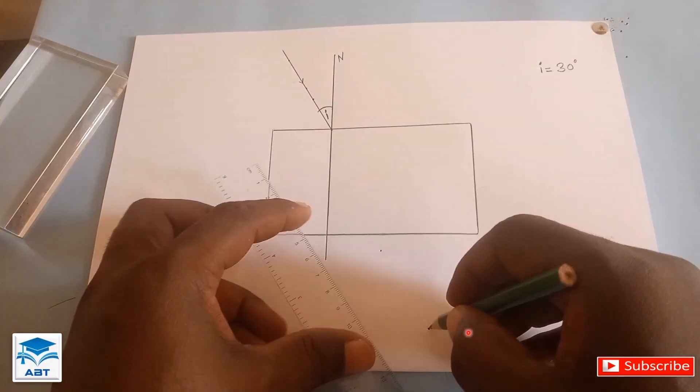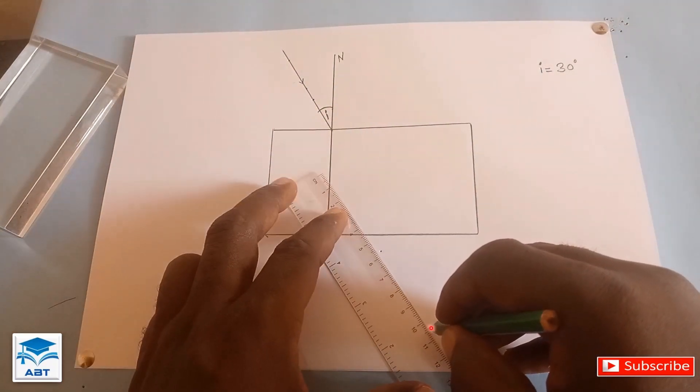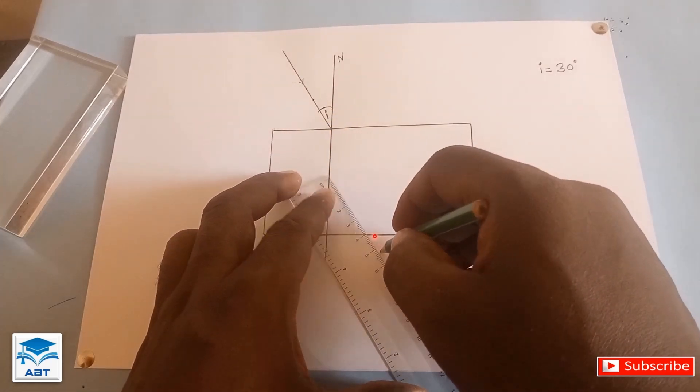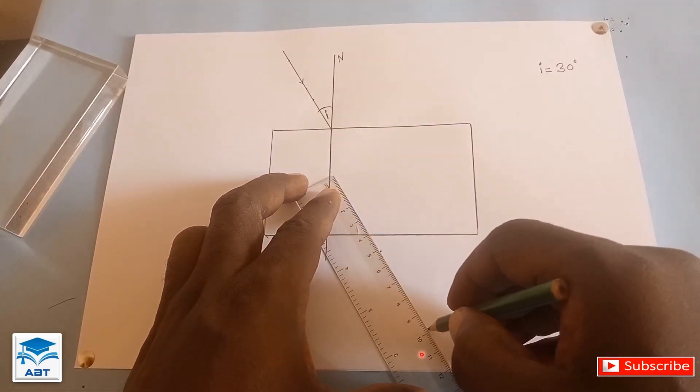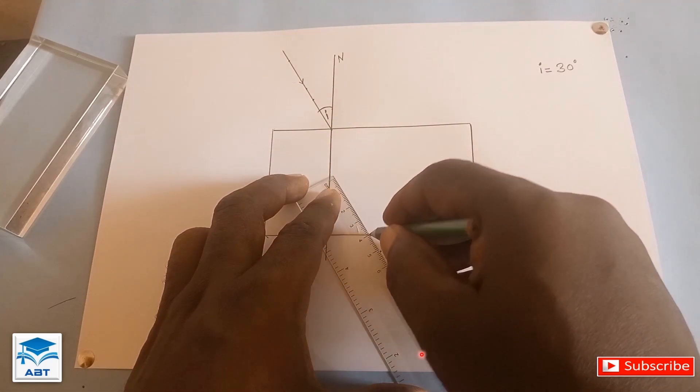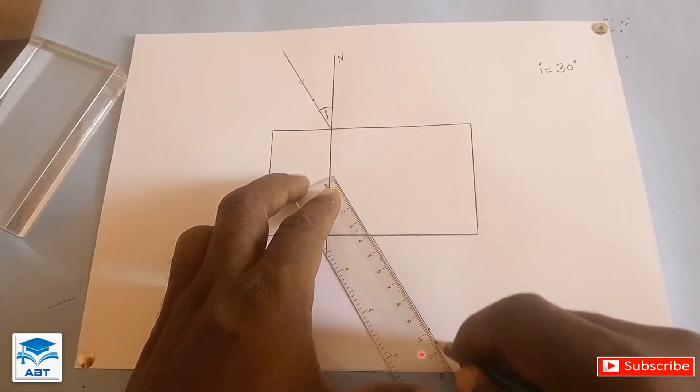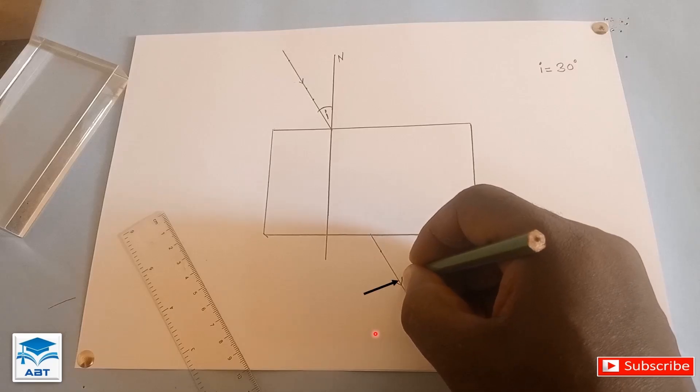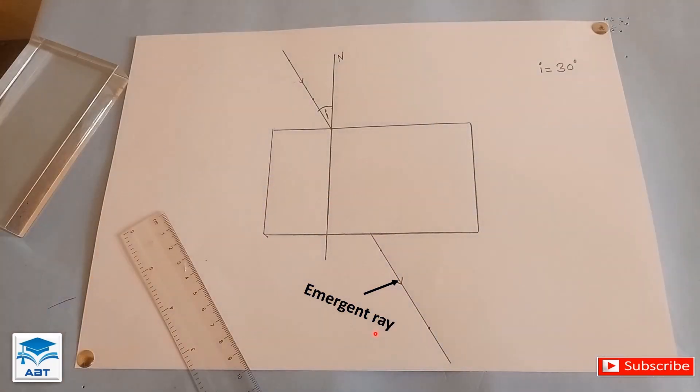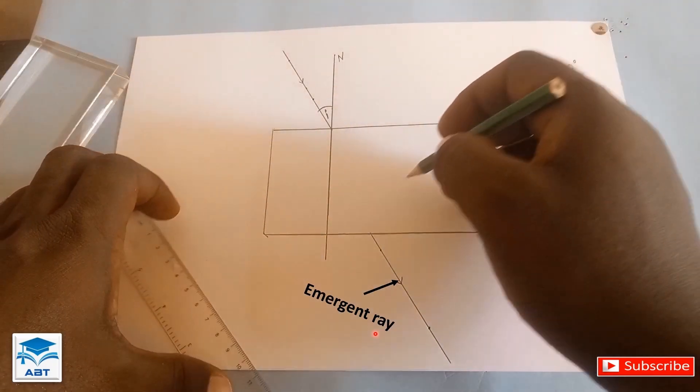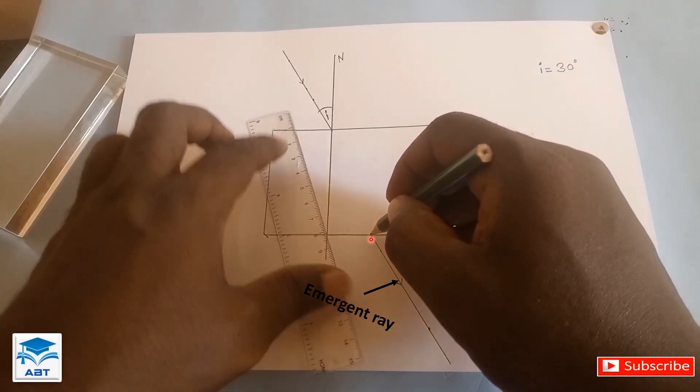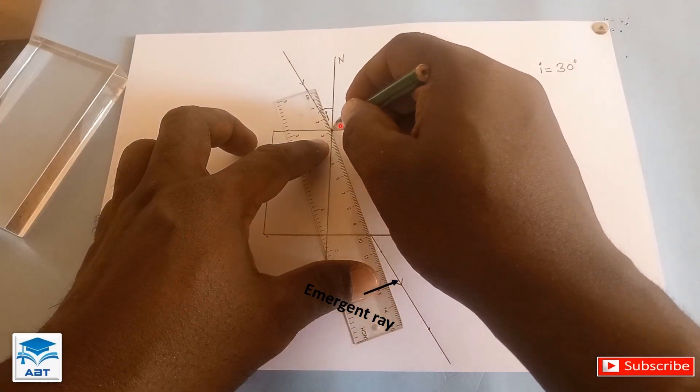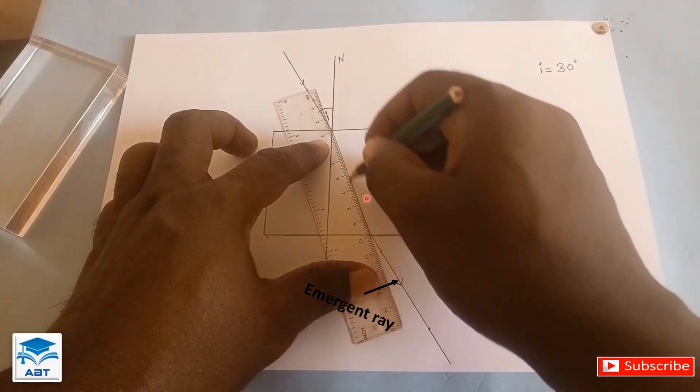We draw a straight line passing through these two points and meeting the outline of the prism. This line is known as the emergent ray and we join this point of intersection to the point of incidence.